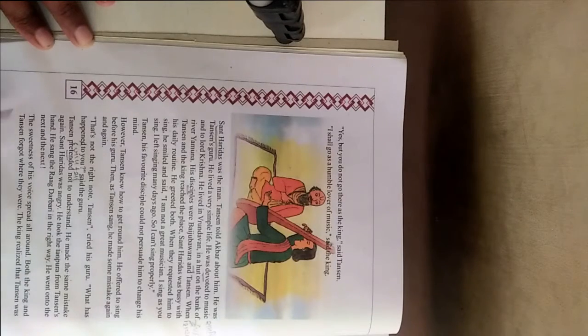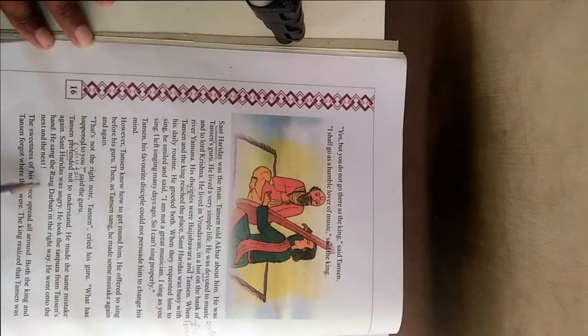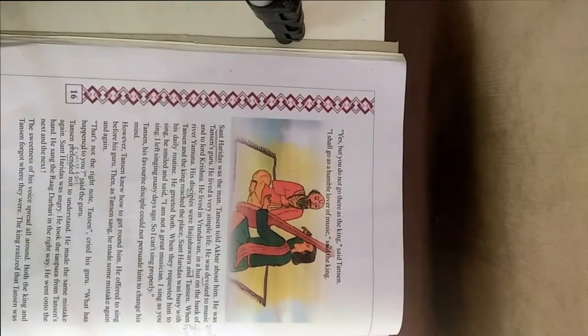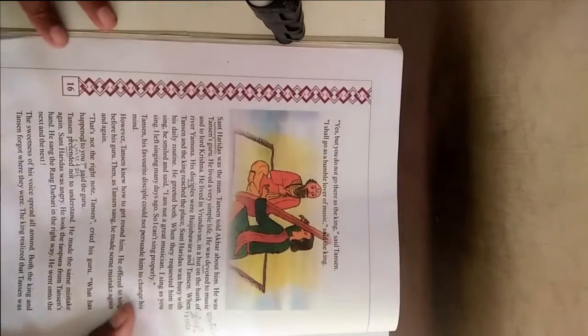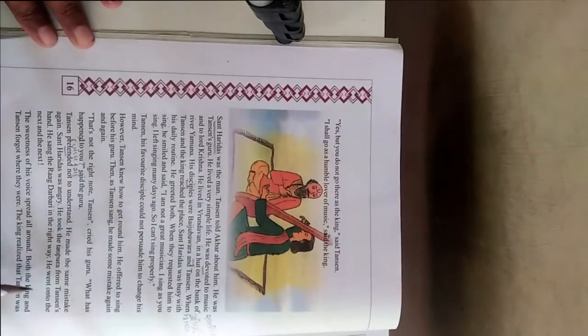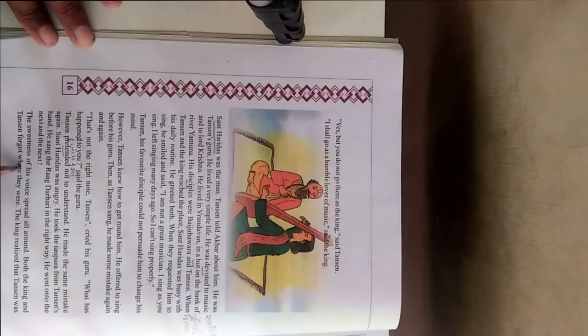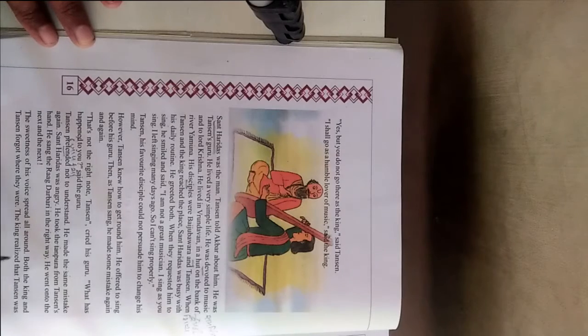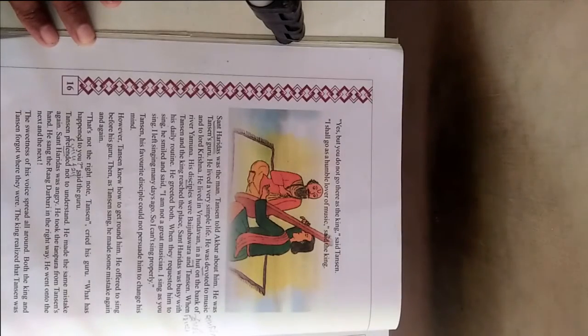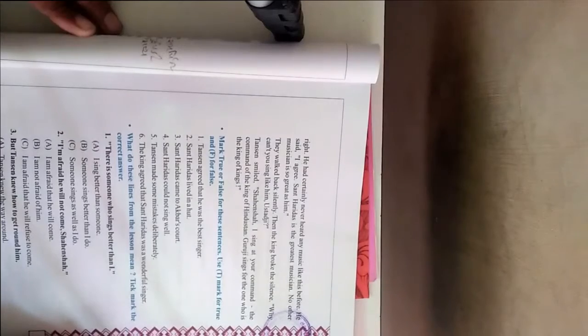He took the Tanpura from Tansen's hand. He sang the Raag Darbari in its right way. He went on to the next and the next. The sweetness of his voice spread all over. Both the king and Tansen forgot where they were. The king realized that Tansen was right. He had certainly never heard any music like this before.